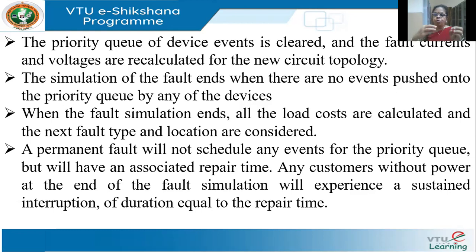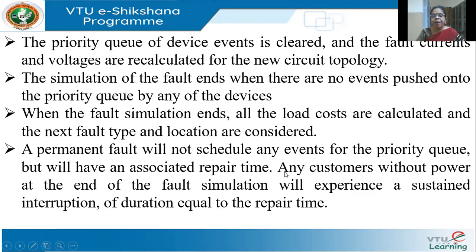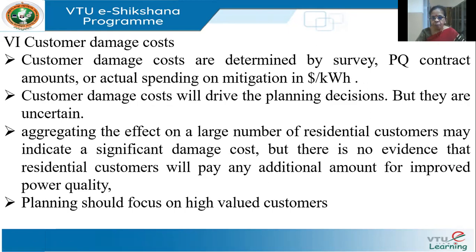For different types of faults — fault number one, fault number two — we find out the cost. A permanent fault will not schedule any new events because the state won't change while the fault persists, leading to loss of power. Any customer without power will experience a sustained interruption of a duration equal to the repair time. This is how you simulate the fault.